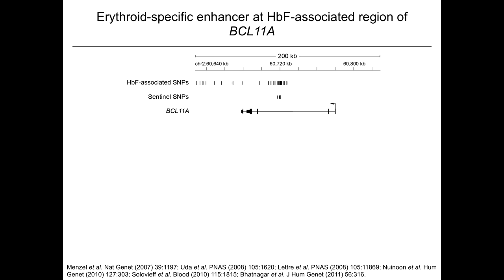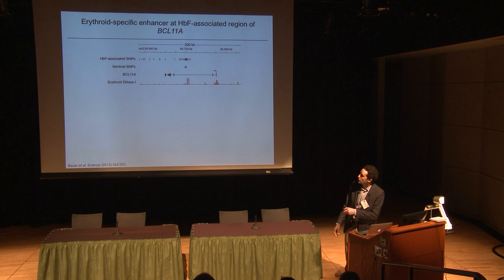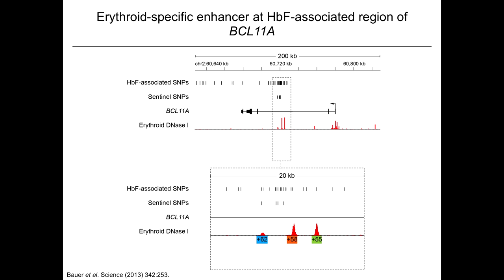Back to BCL11A: here's a map of the BCL11A gene, and you can see in the large second intron, more than 50 KB away from the promoter, reside variants associated with fetal hemoglobin level. To assess regulatory potential, we used DNase-1 sensitivity, a measure of open chromatin, and in erythroid cells observed DNase-1 sensitivity peaks at this region of intronic sequence. Zooming in, we observed three discrete hypersensitive sites labeled 55, 58, and 62, based on their distance in kilobases from the transcription start site, each with overlying trait-associated variants.